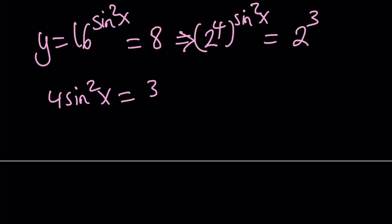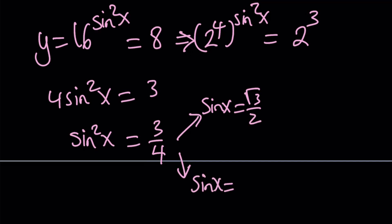And sine squared x equals 3/4. If you square root both sides, you get two solutions. Either sine x is root 3 over 2, or negative root 3 over 2.